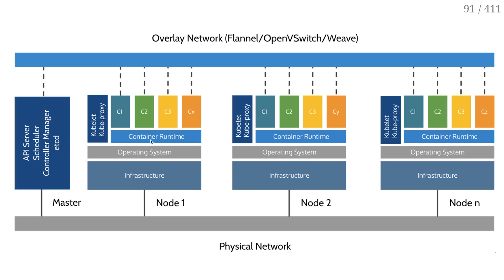On the right, the three big colorful rectangles are nodes to run my containers. On each node, I have infrastructure — so that means it's a machine. It could be a physical machine, it could be a virtual machine, it doesn't matter. Then I have an operating system — most of the time that's going to be Linux, but Kubernetes can also work on Windows now. Then I have a container runtime — most of the time that's going to be Docker, but it could also be something else like CRI-O, containerd, and so on.